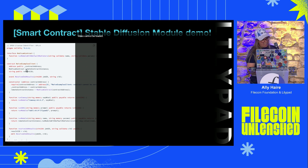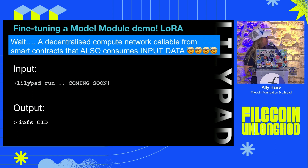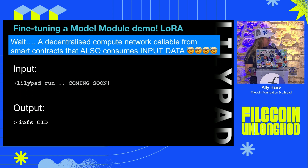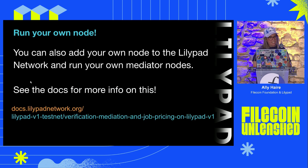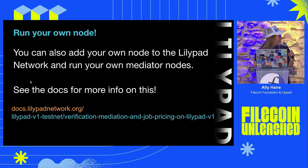Coming up soon is fine-tuning a stable diffusion model with LoRA. This actually allows for input data to go into your model and output a result — a pretty big step forward for distributed compute networks. It will be available in the docs very shortly. You can also run your own node on this network — if you want to get paid for jobs on your spare GPU or CPU at home, or even a big data center, you can earn money from running those jobs.